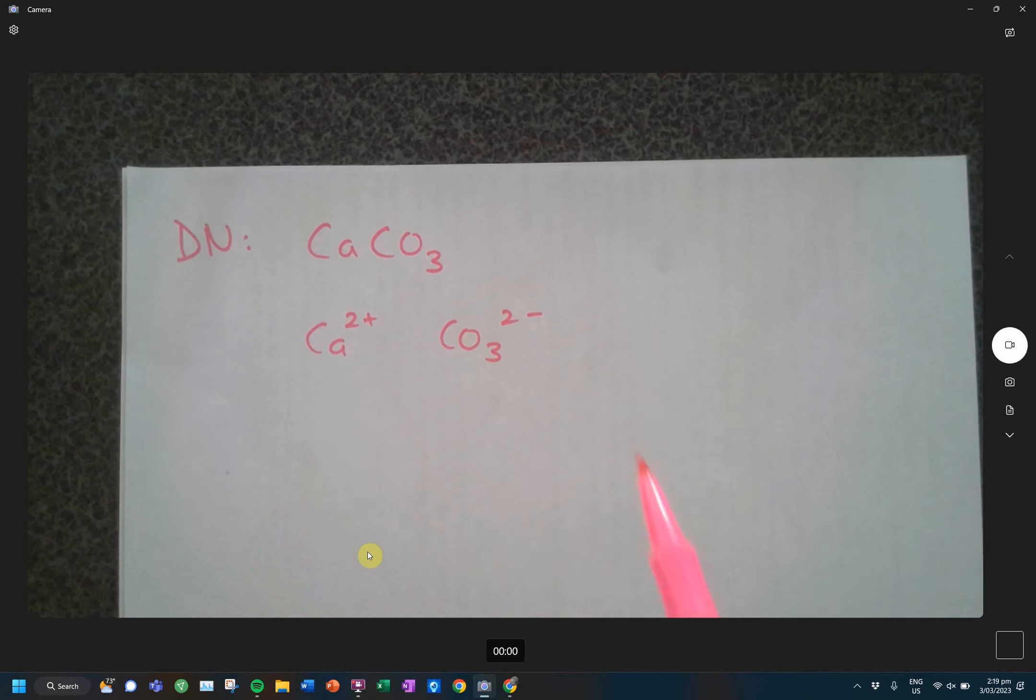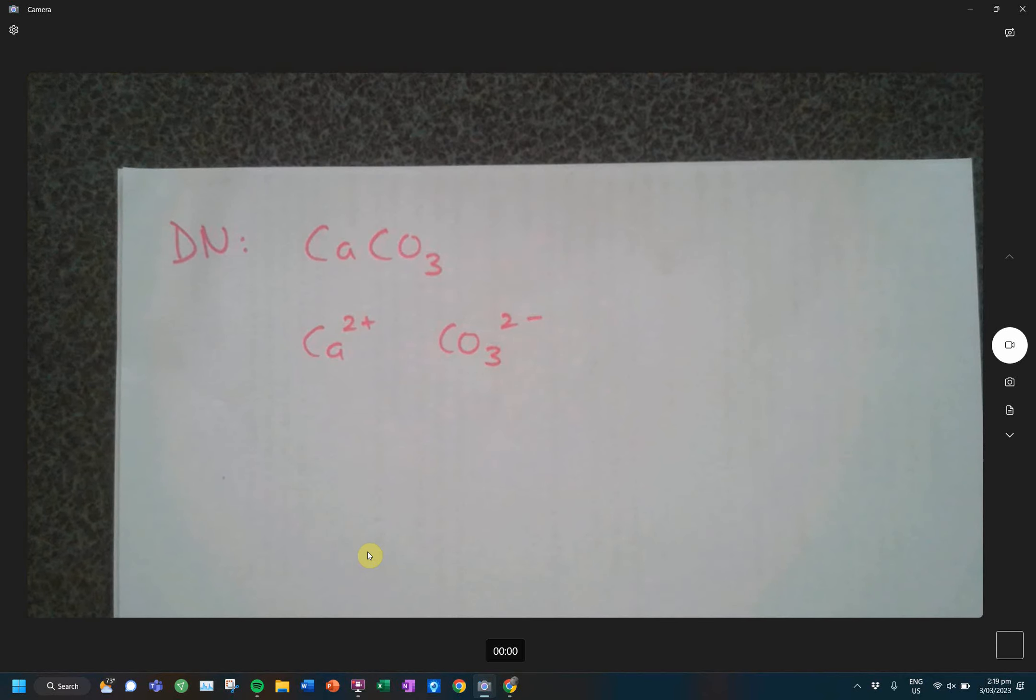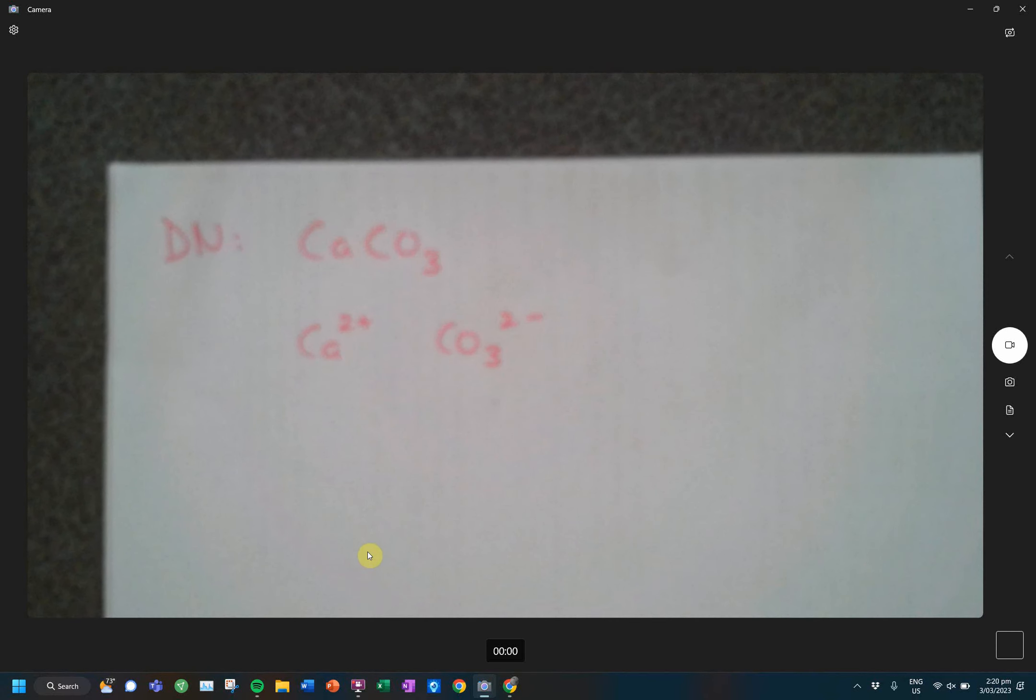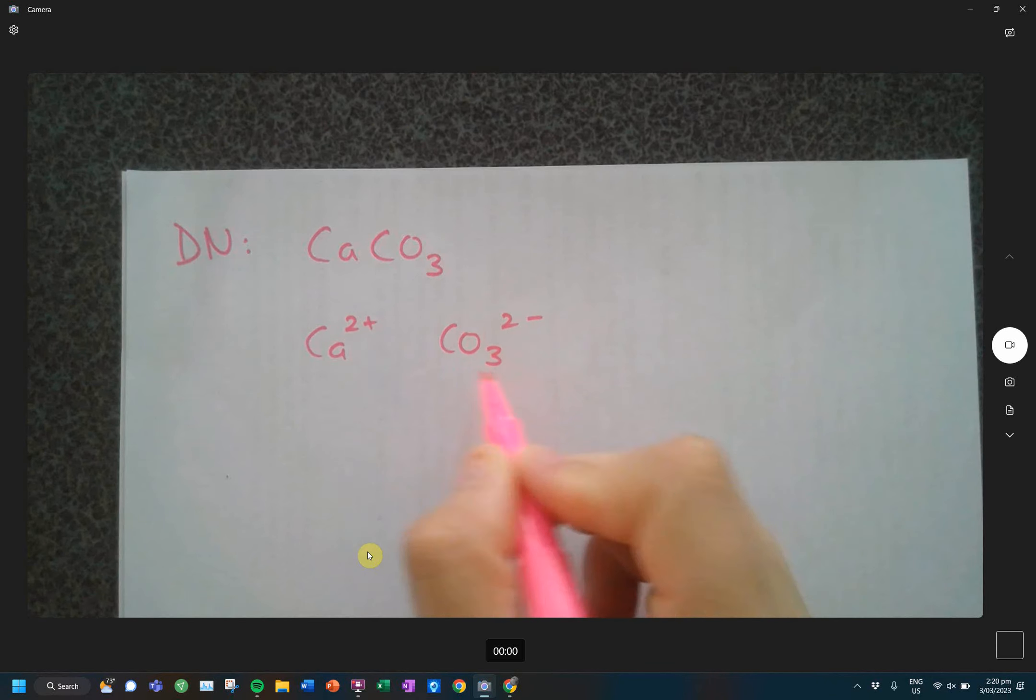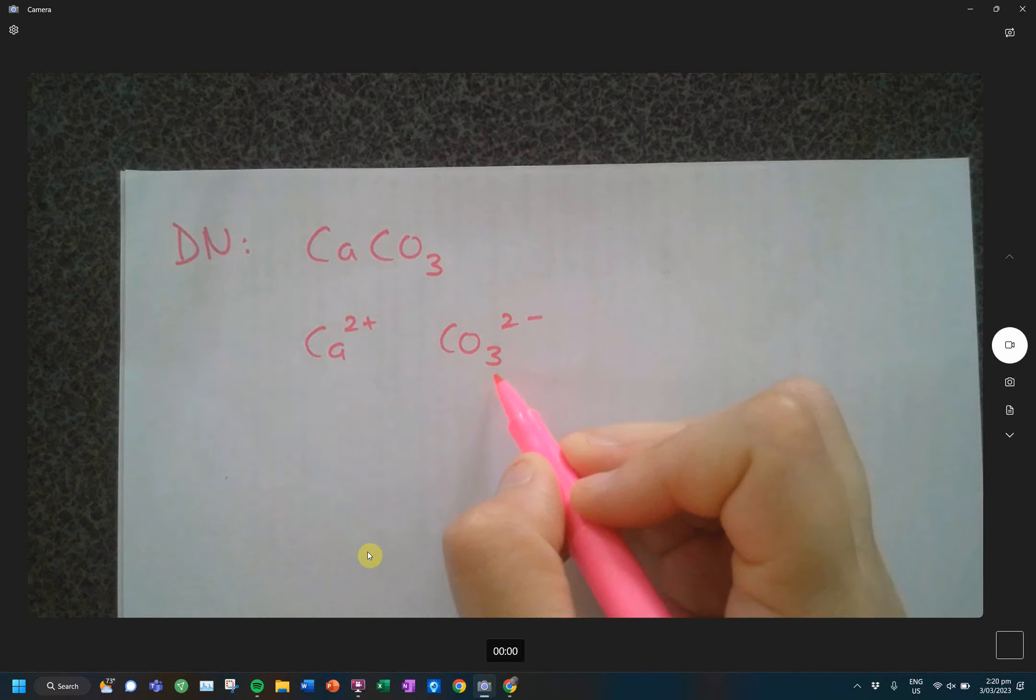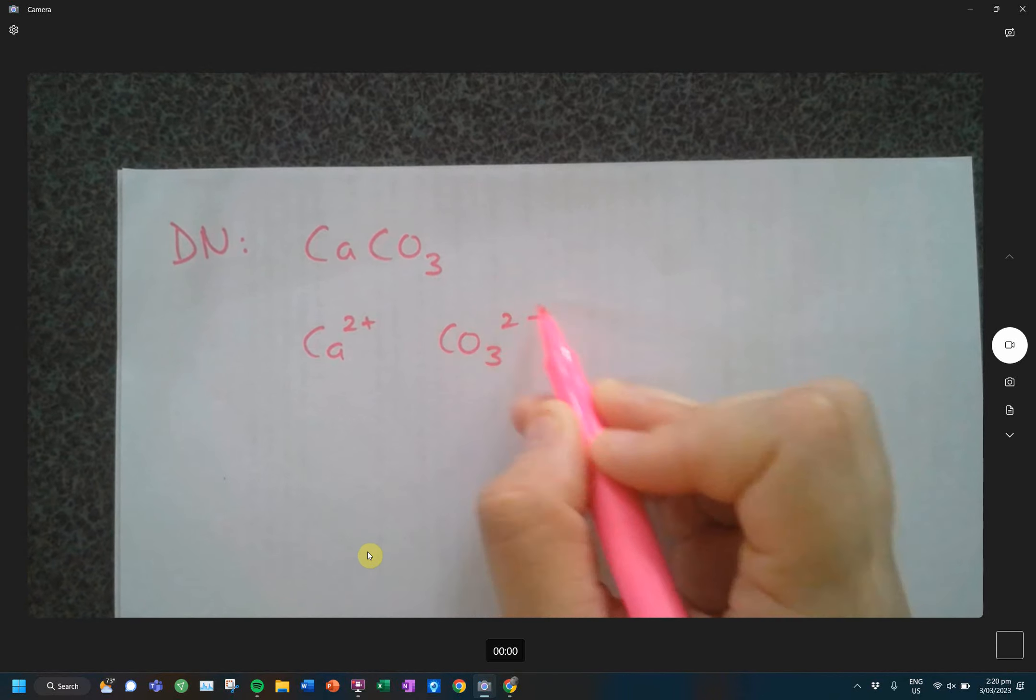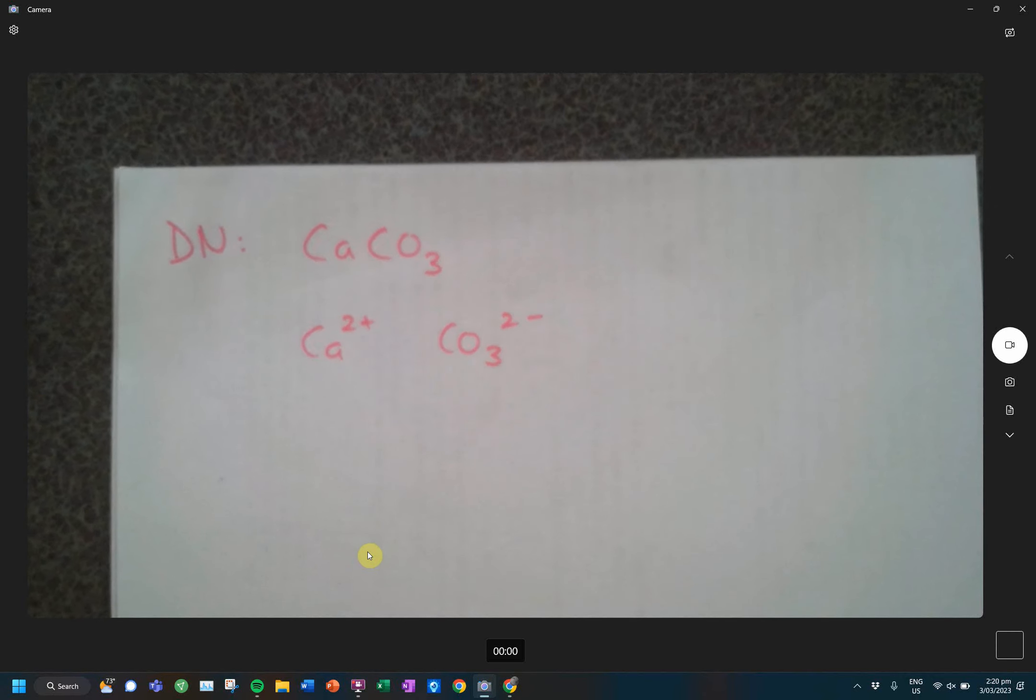I do want to point out when it comes to the charges, be mindful that these guys up here are written as small numbers at the top, because they are superscripts. So superscripts are the top bit, bottom bit is the subscript. And then big numbers in front are your coefficients. So this here is referring to the number of atoms. This up here refers to the charge of that polyatomic ion.